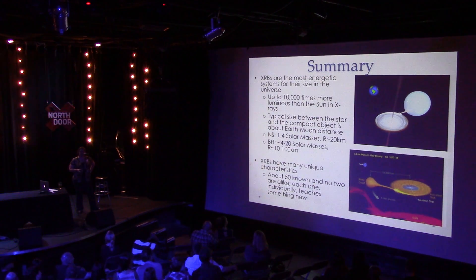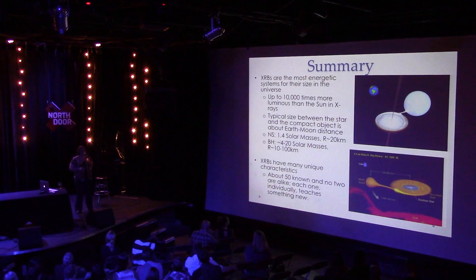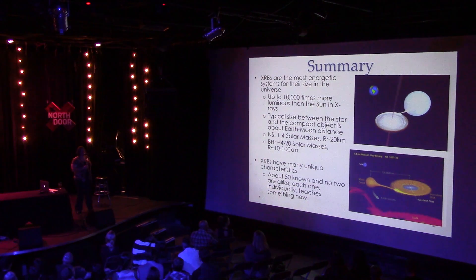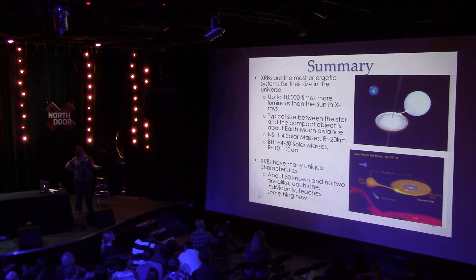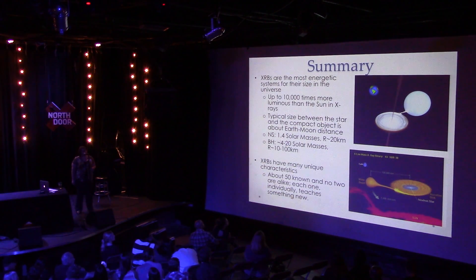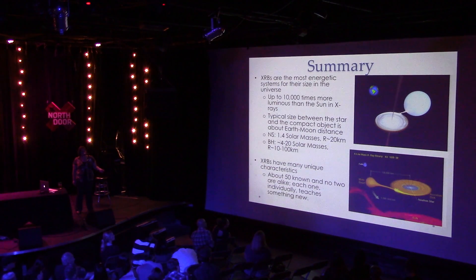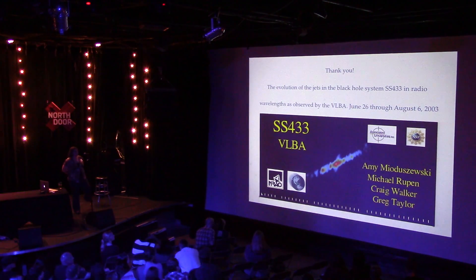We know of about 50 x-ray binaries, most in our own galaxy, with a few in Andromeda and M33. They're all unique. Some actually have a white dwarf as the companion instead of a sun-like star — a double compact object with a neutron star in the middle and a white dwarf on the outside. These can be very tiny; one has an orbit of about 11 minutes, and to scale it fits well within the Earth-Sun distance.